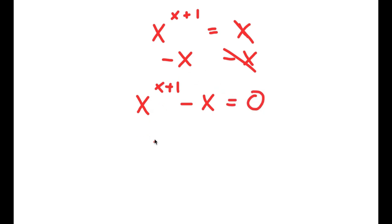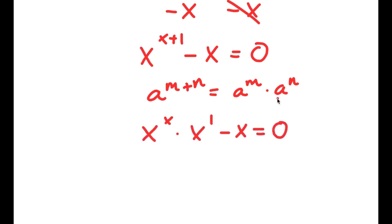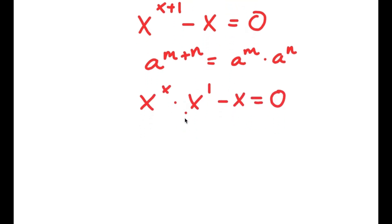If I have something in the form a to the power of m plus n, this is equal to a to the power of m times a to the power of n. So x to the power of x plus 1 equals x to the power of x times x to the power of 1. Now I have this minus x is equal to 0. Factoring out x, I get x times (x to the power of x minus 1) is equal to 0.